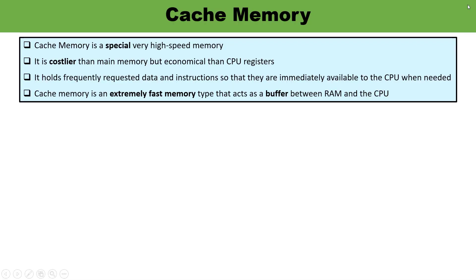Let us talk about cache memory. Cache memory is a very special kind of memory — it is a very high speed memory. Its cost is higher than the main memory or disk memory, but it is always economical in comparison to the CPU register. Cache memory is an extremely fast memory, and it acts as a buffer in between the RAM and the CPU.